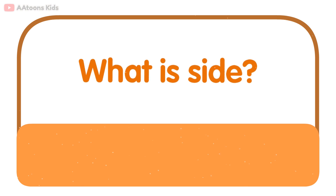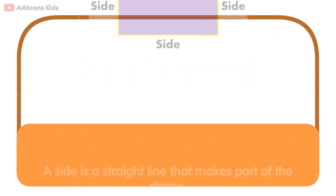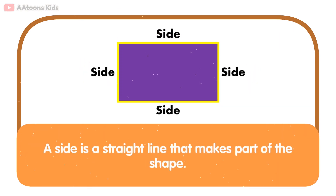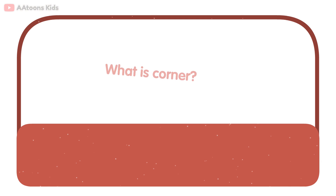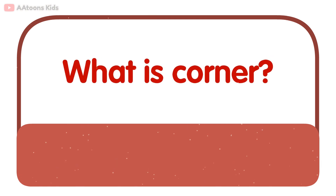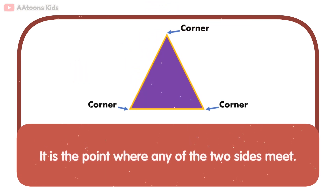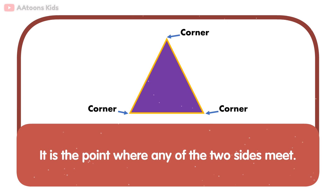What is a Side? A side is a straight line that makes part of the shape. What is a Corner? It is the point where any two sides meet.